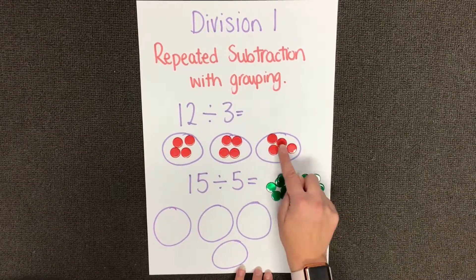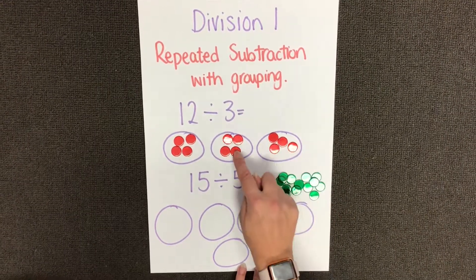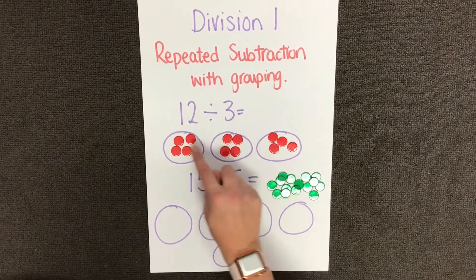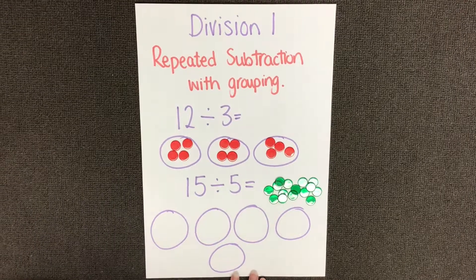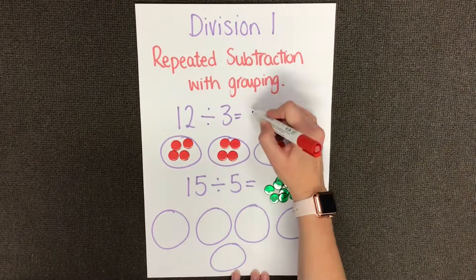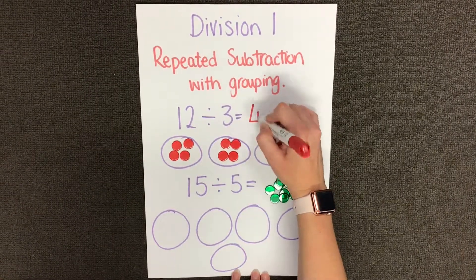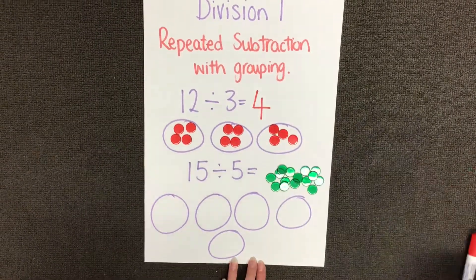1, 2, 3, 4. 1, 2, 3, 4. 1, 2, 3, 4. Therefore the answer to 12 divided by 3 equals 4.